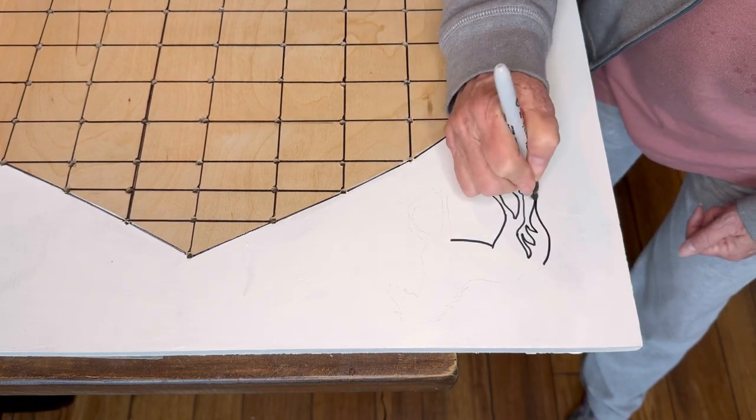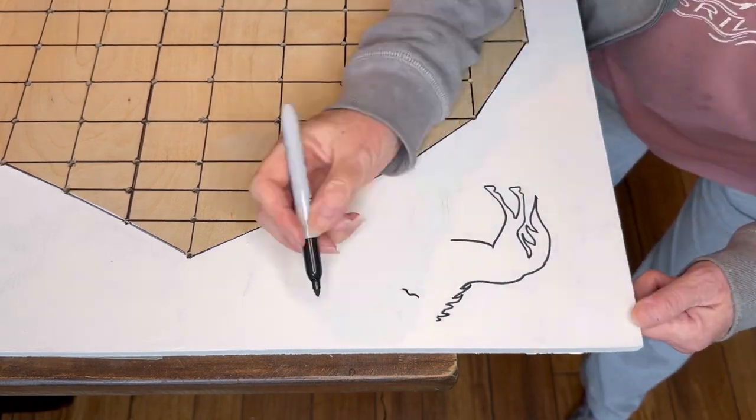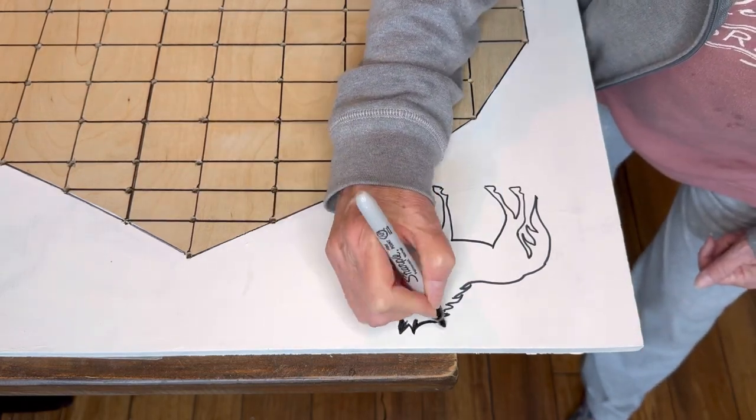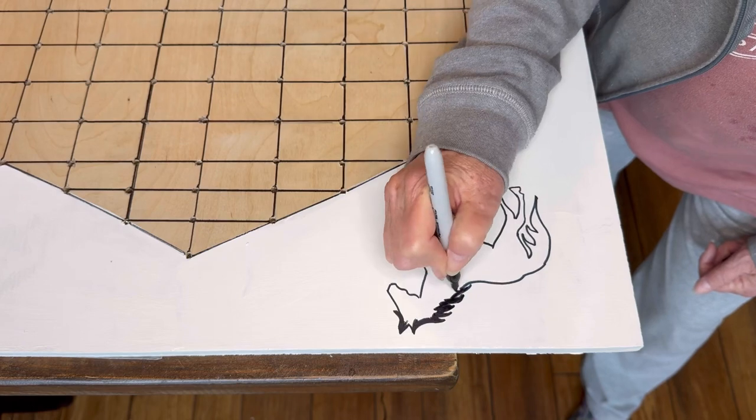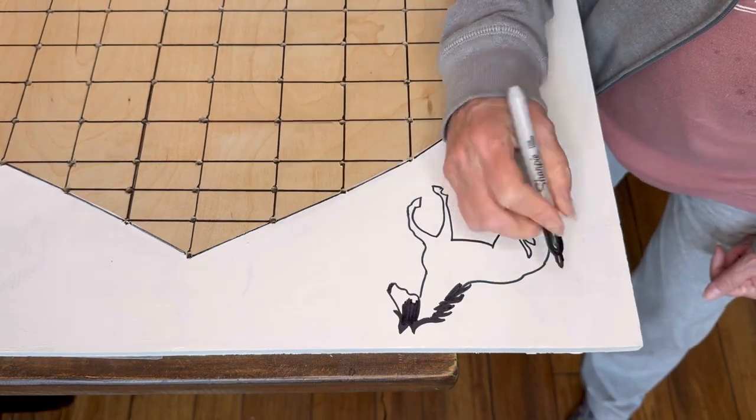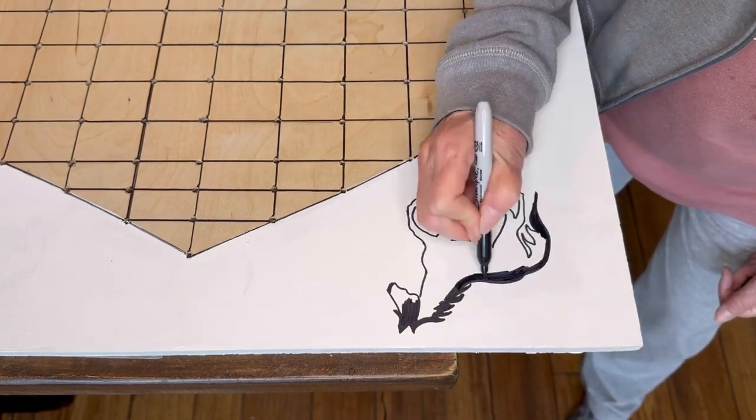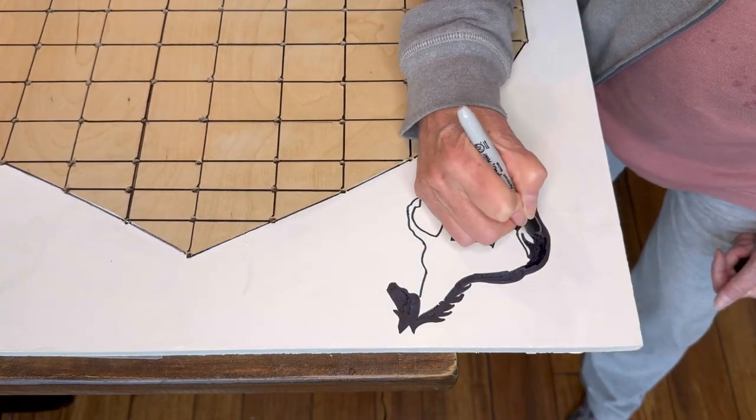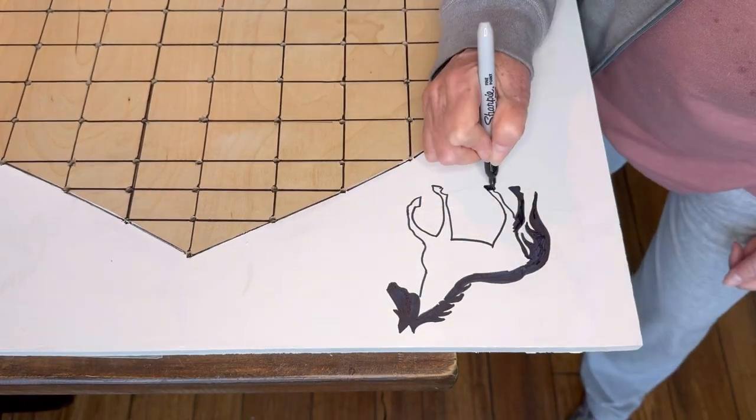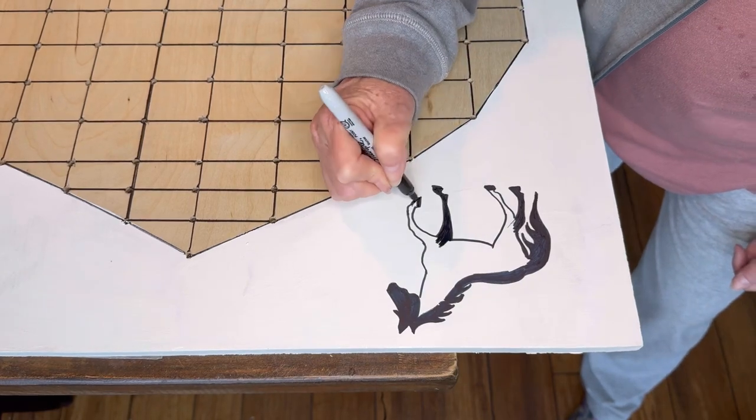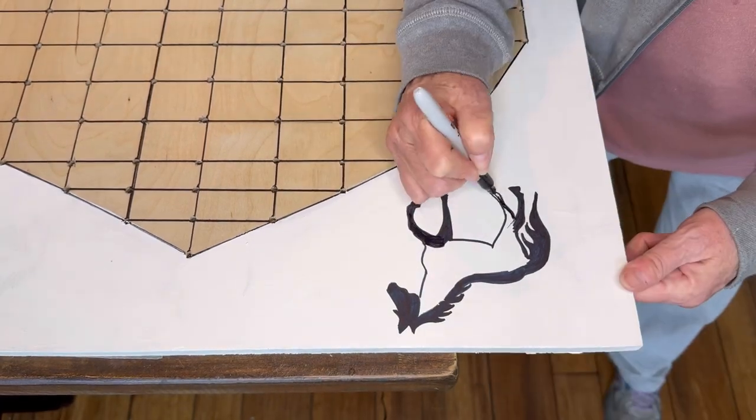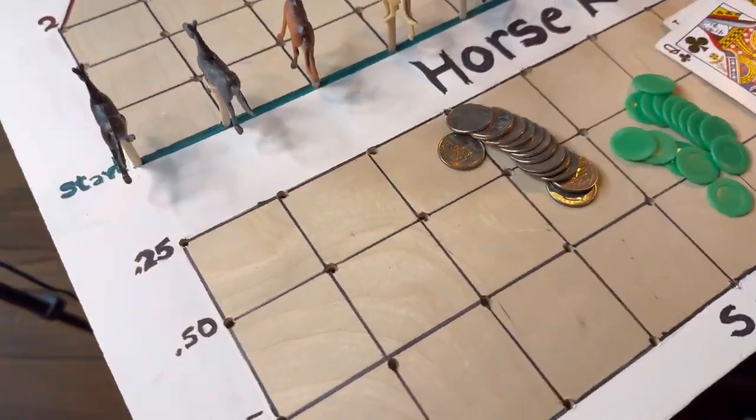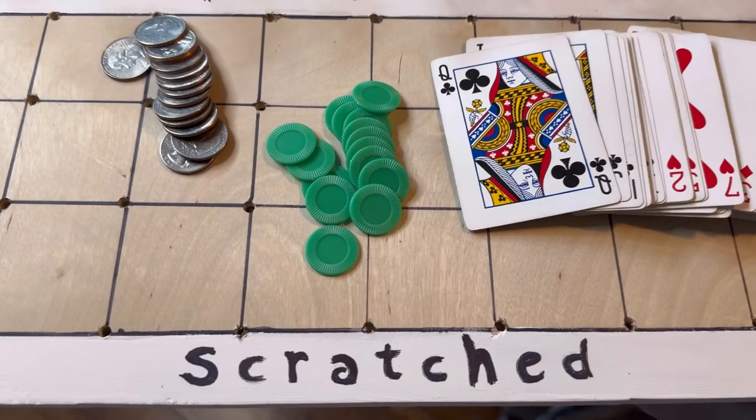I used a Sharpie marker to fill in. However, you could use a paint pen or you could do this with actual paint if you prefer. And again, this could be done with a vinyl graphic if you wanted to cut one or purchase one. I also used a red marker for the finish line and a green marker for the starting gate. So here's what it looks like finished.